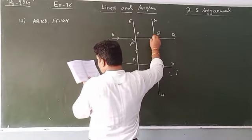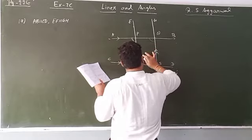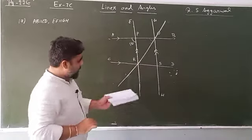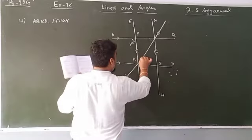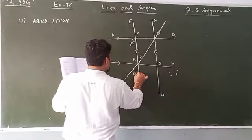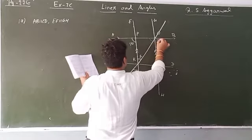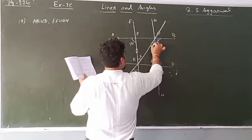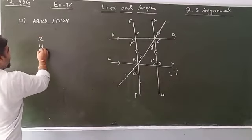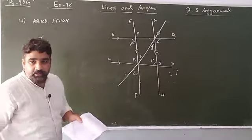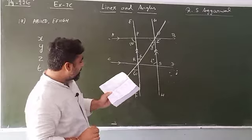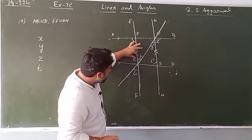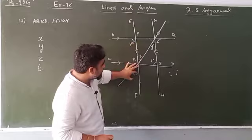Another line RQ has been drawn. This angle is x degrees, which we need to find. So we have to find the values of x, y, z, t. X will be equal to 60 degrees — vertically opposite angles are equal.